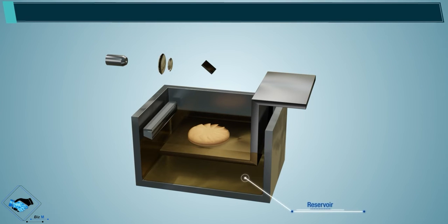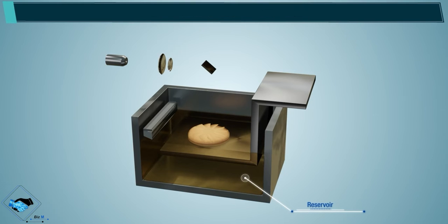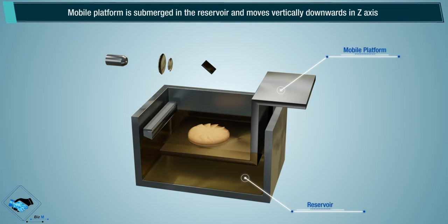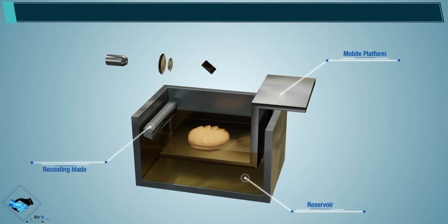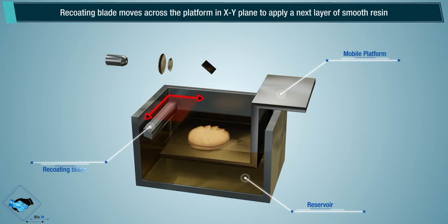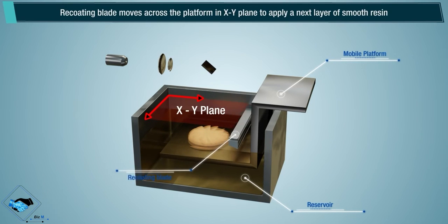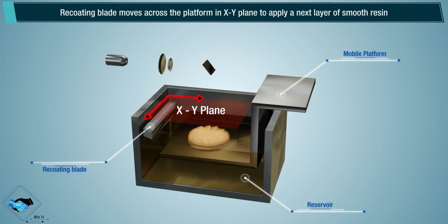The Reservoir contains a photosensitive liquid resin. The Mobile Platform is submerged in the reservoir and moves vertically downwards in the Z-axis after each resin layer is solidified. The Recoating Blade moves across the platform in the XY plane to apply the next layer of smooth resin.